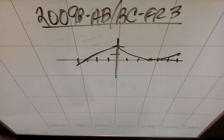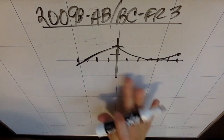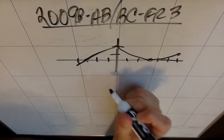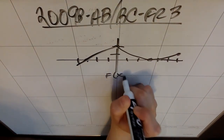We're going to do a little bit more AP review. This is 2009 Form B, AB BC Free Response 3. You're given a graph — this is the graph of f of x.